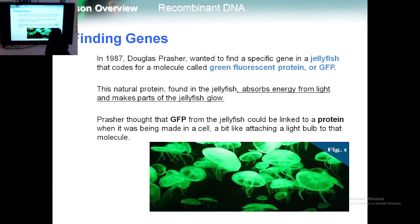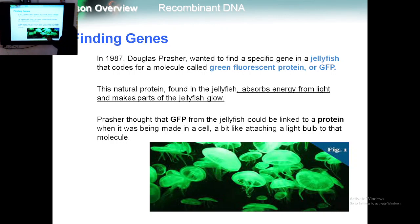Another thing scientists use is finding genes. If we want to find a specific gene for a specific protein, we follow specific steps. Douglas Prasher wanted to find a specific gene that produces green fluorescence in jellyfish — specifically a protein found in jellyfish that gives it a specific color, fluorescing under UV light. They call it GFP, or green fluorescence protein.